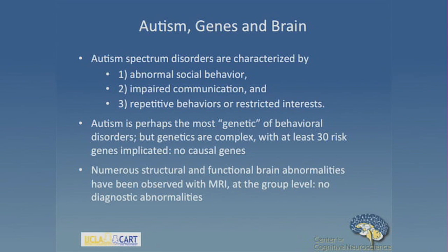Today I'm going to be talking about research that we're doing at UCLA, exclusively in autism and primarily in imaging and genetics. Autism is, as you probably know, among the most genetic of complex behavioral disorders. But unfortunately, the genetics are extremely complex.